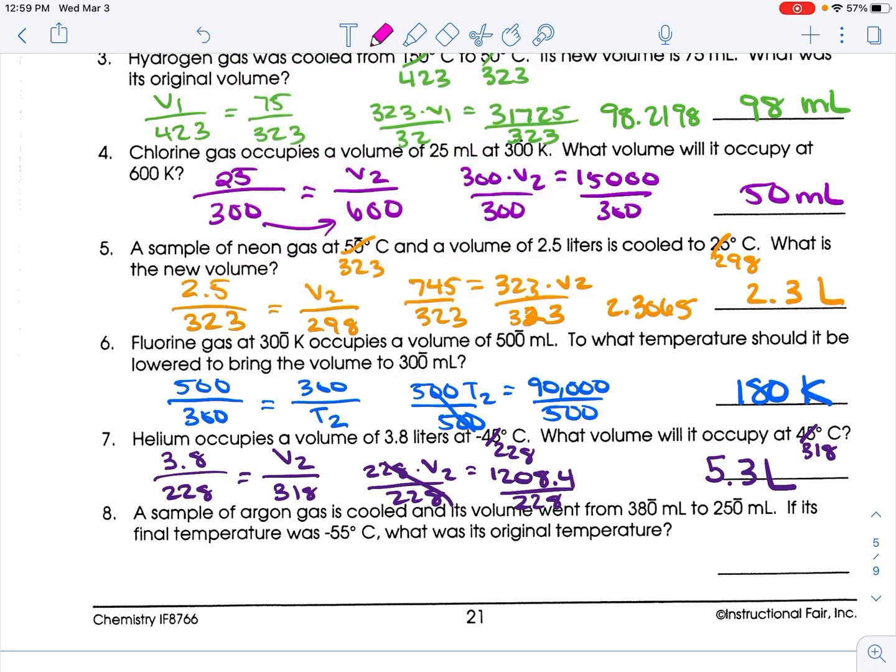Back to pink, I guess. I see negative 55. So negative 55 plus 273 is 218. So we start at 380, and it's 218. And we go to 250, and I don't know. So 380 times T2 equals 218 times 250, which is 54,500. So divide both sides by 380, and you get 143. That's not what they got. Did I do something wrong? Answer key says something else.